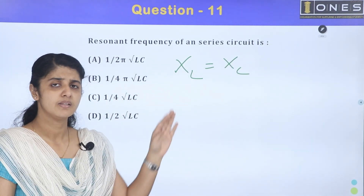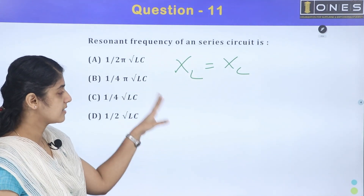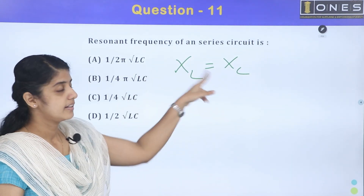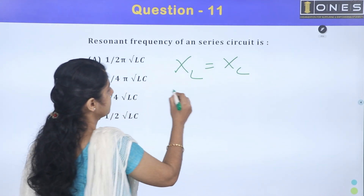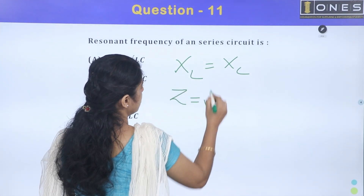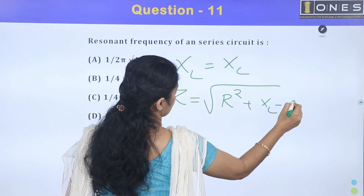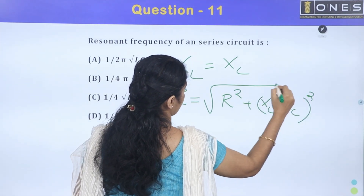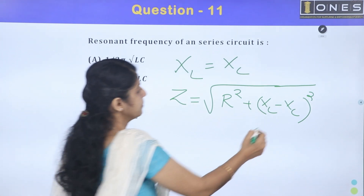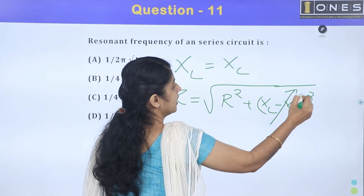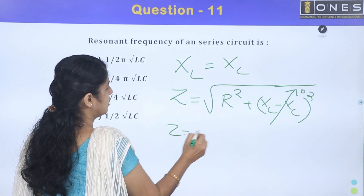What is the resonance condition? The resonance condition is when inductive reactance and capacitive reactance are equal. Impedance Z = √(R² + (XL − XC)²). At resonance, (XL − XC) is zero, so Z = R.